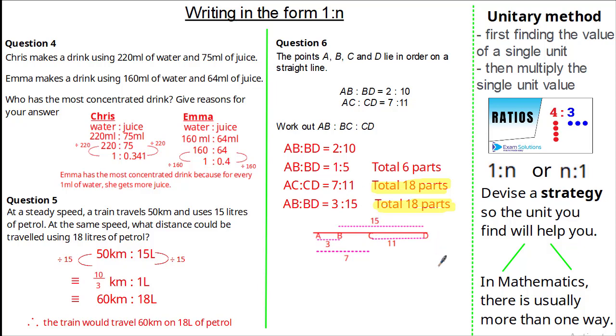Now going back to our original question, it asked us to find the ratio of AB to BC to CD. So let's start with our easy ratio. We can clearly see that AB is 3 parts. Looking at CD, we have 11 parts. We need to work out the ratio of B to C. Given that B to D is 15 and C to D is 11, we can clearly see that BC must be 4 parts. So our final answer is 3 to 4 to 11.